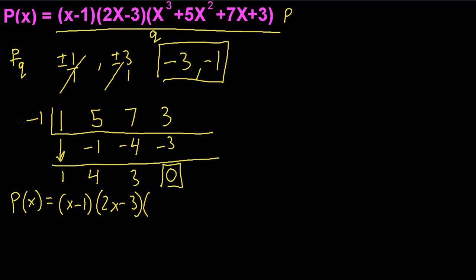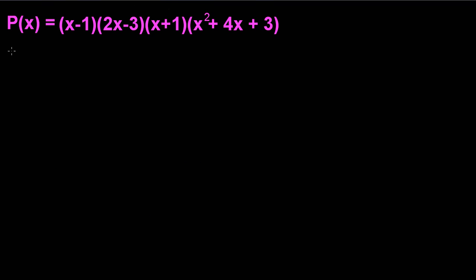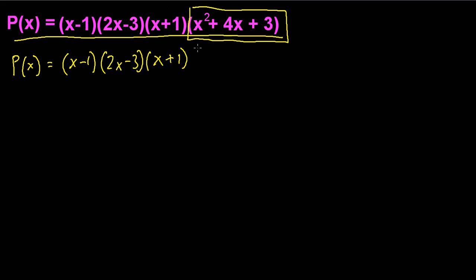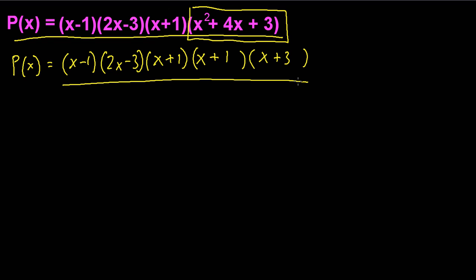After factoring out (x + 1), we're left with the quadratic x² + 4x + 3. By inspection, this factors as (x + 1)(x + 3). So the full factored form of our original polynomial is (x − 1)(2x − 3)(x + 1)²(x + 3), giving us five linear factors with roots at x = 1, x = 3/2, x = −1 (double root), and x = −3.